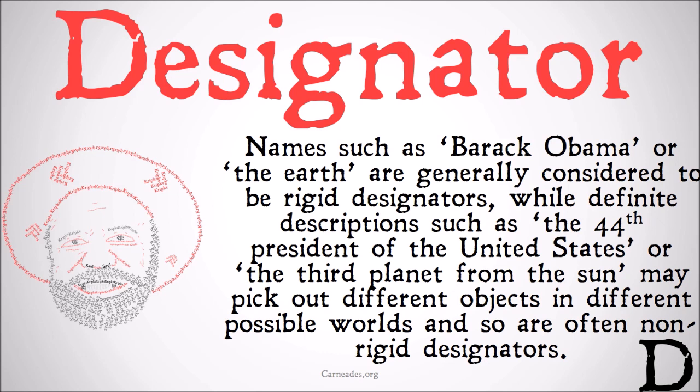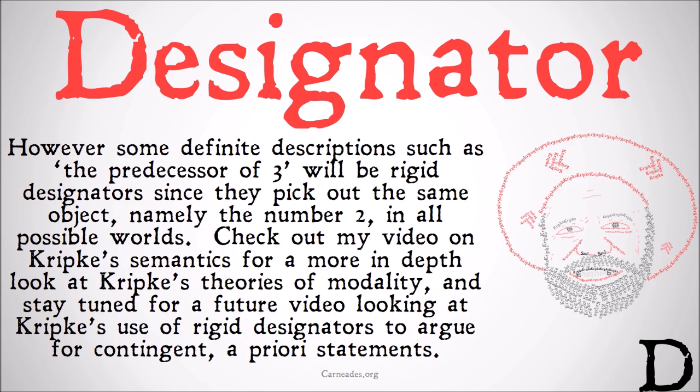There are some definite descriptions, such as 'the predecessor of three,' which are rigid designators because they pick out the same object — namely the number two — in all possible worlds. So just because something is a definite description, it doesn't imply that it's a non-rigid designator. However, usually these cases only occur with mathematical or logical truths that are true across all possible worlds and not contingent in some way.